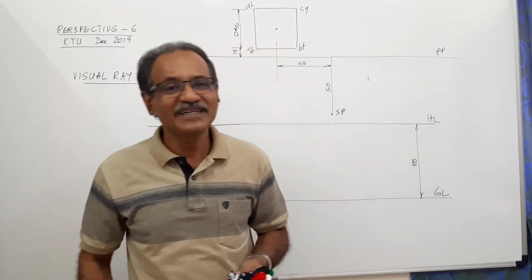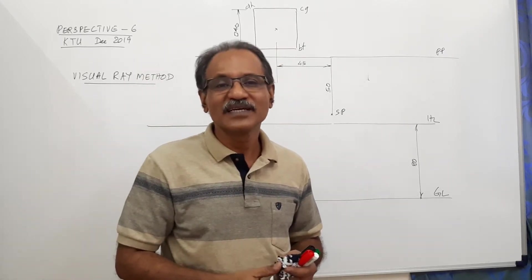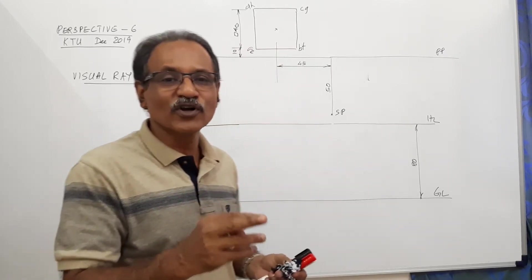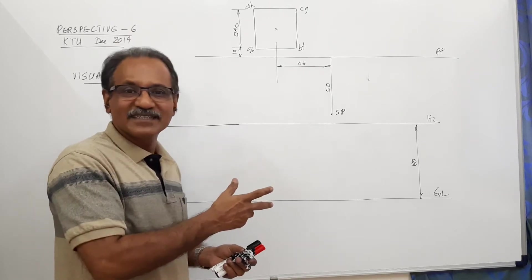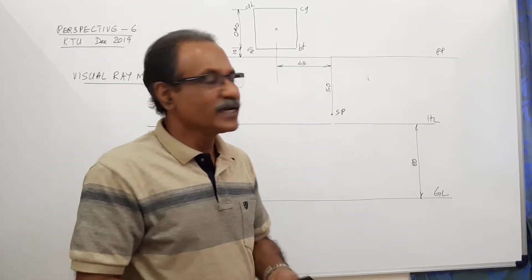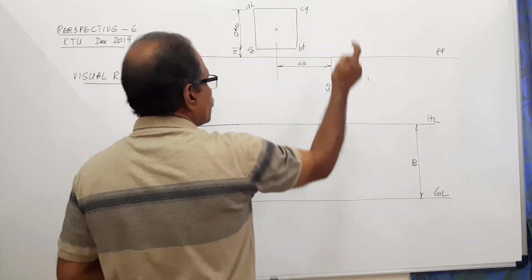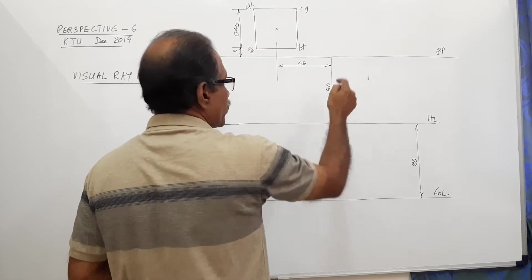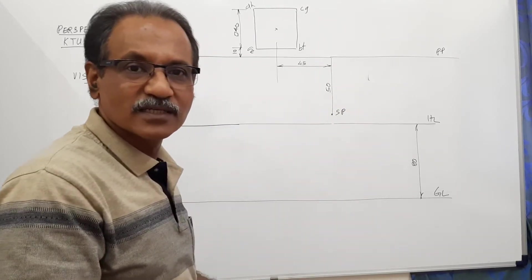The second method is slightly difficult, so I will go for the visual ray method with elevation. This is the plan of the object and plan of the station point. Now, what is the elevation of the object?